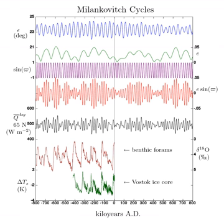For Earth's current orbital eccentricity, incoming solar radiation varies by about 6.8%, while the distance from the Sun currently varies by only 3.4%.